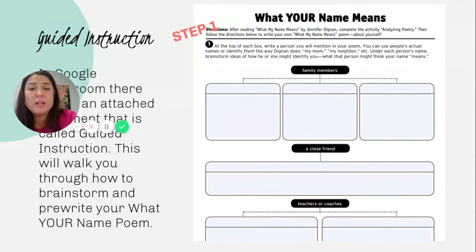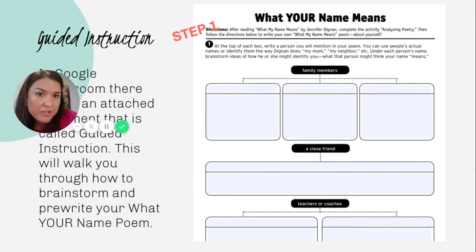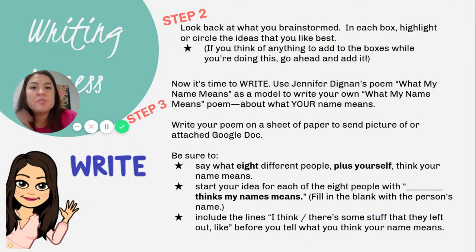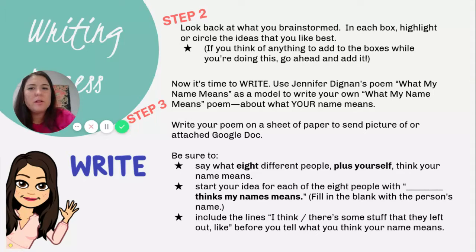Here's the guided instruction. I'm going to put a link to this, and it's going to be interactive. You don't have to turn this in, but it's a good way to use it as brainstorming and pre-writing for your poem. It's going to go through the different steps to brainstorm — think of different family members that you have, and then think about how they know you. When they say your name, do they think about the silly girl that laughs at their jokes, or the strong boy that helps on the farm? You've got to think about how other people are thinking of you. Then step two is to look back at what you've brainstormed, highlight or circle the ideas that you like the best, and then narrow down the ones that are the very best.